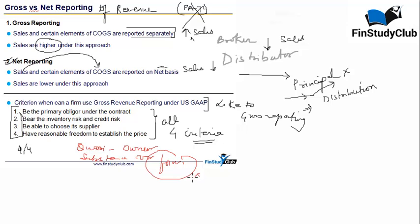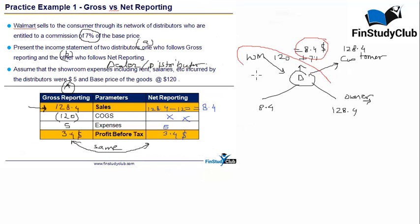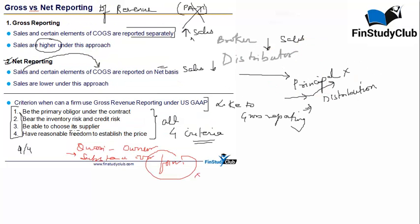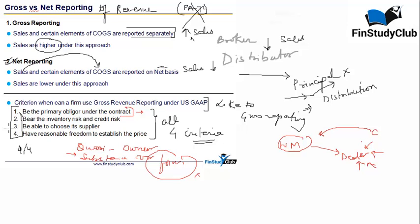The gist of all four criteria is that we are looking at the substance of the relationship between Walmart and the dealer. The first condition is that the dealer must be the primary obligor under the contract — if something happens to the goods, the dealer cannot say it is Walmart's problem; the dealer undertakes all service and other obligations. The second condition is that the dealer bears the inventory risk and credit risk — if inventory is damaged or the customer doesn't pay, it hits the dealer's bottom line and cannot be reimbursed by Walmart.